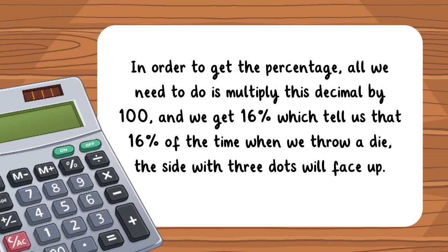In order to get the percentage, all we need to do is multiply this decimal by 100, and we get 16%, which tells us that 16% of the time when we throw a die, the side with three dots will face up.